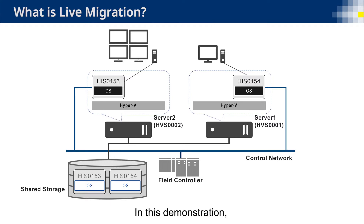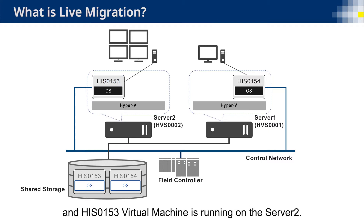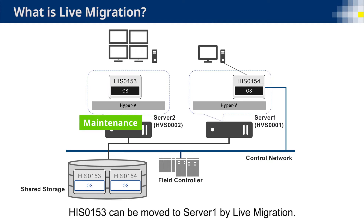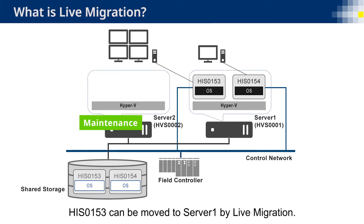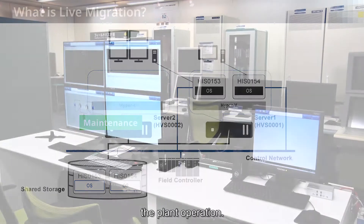In this demonstration, HIS0154 Virtual Machine is running on Server 1 and HIS0153 Virtual Machine is running on Server 2. When Server 2 requires hardware maintenance, HIS0153 can be moved to Server 1 by live migration. Live migration will take only a few seconds, and plant operators may not notice it. Hardware maintenance can be done without affecting plant operation.